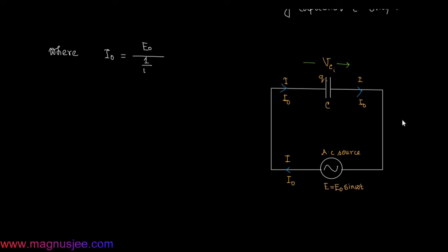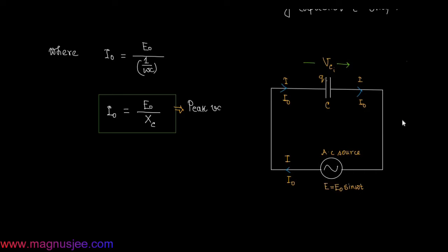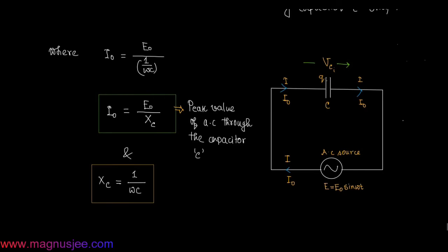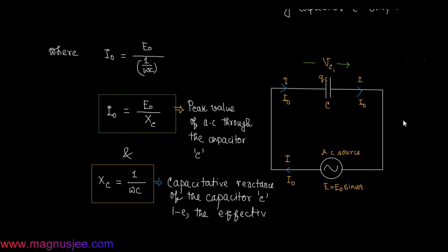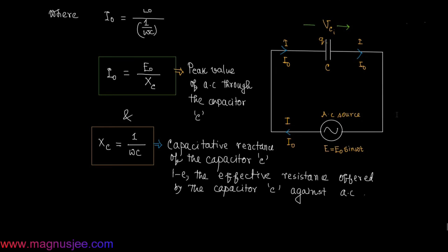Here, i0 = e0 / Xc, where Xc = 1/ωC is the capacitive reactance of the capacitor. Capacitive reactance is the effective resistance offered by the capacitor of capacitance C against the alternating current.